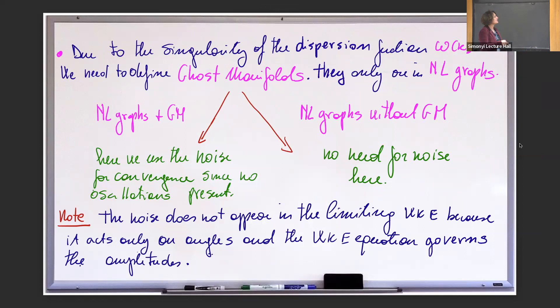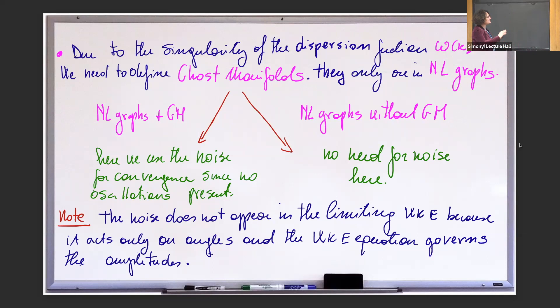Now let's think about the non-leading graphs. When you follow your graphs and start integrating them, you have to deal with the situation where omega is going to be zero, and that happens on a hyperplane. There you use the noise. When omega is singular — we call the place where omega is singular the ghost manifold — in the ones where you really are on the ghost manifold, there is no way to do oscillatory integrals because there's nothing you can use, and hence the noise is what works and what helps. When you are outside the ghost manifold, you can do oscillatory integral estimates and get powers of epsilon.